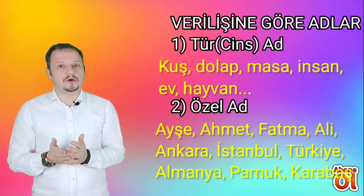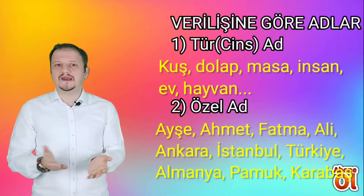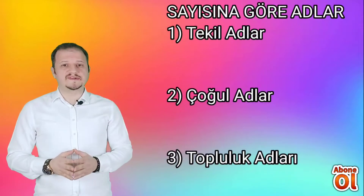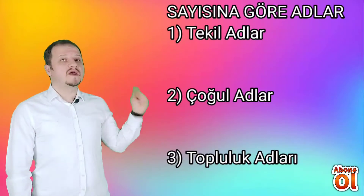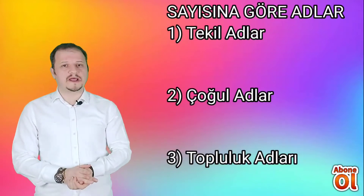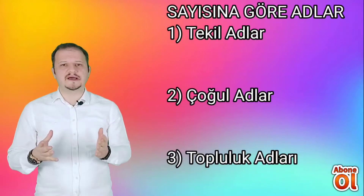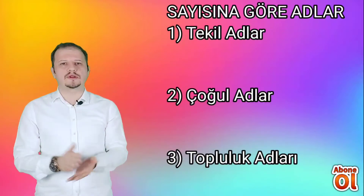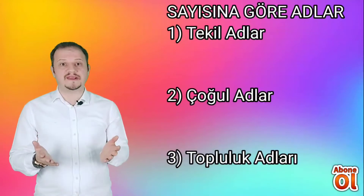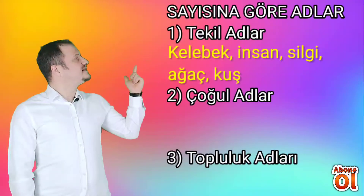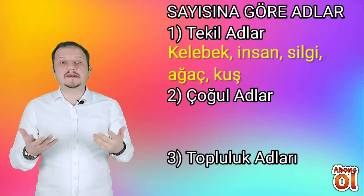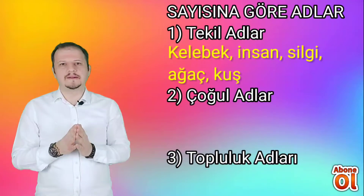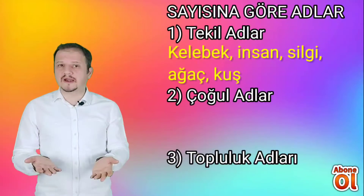Hayvanlara verdiğimiz pamuk, karabaş gibi adlar da özel adlardır. İsimleri sayısına göre gruplandırdığımız zaman tekil adlar, çoğul adlar ve topluluk adları olmak üzere üç farklı grupta inceleriz. Tekil adlar, aynı türden varlıktan bir tane olduğunu düşündüğümüz zaman kullanılır. Örnek vermek gerekirse: kelebek, insan, silgi, ağaç, kuş tekil addır.